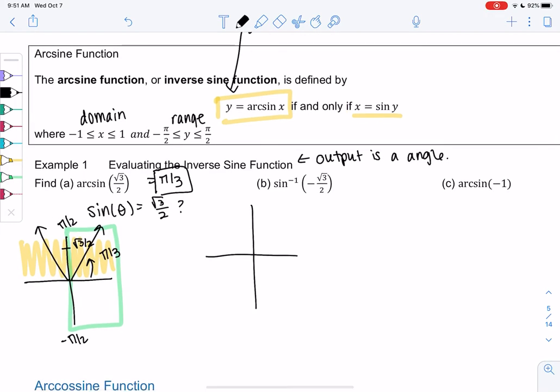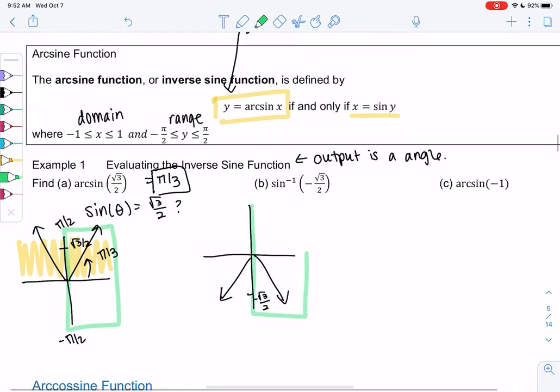Alright, negative root 3 over 2 is going to look the same but down here. For a negative value we're below, and then the domain again is only the right side because it's negative pi over 2 to pi over 2. So we'll go with this angle, and this angle would be negative pi over 3.